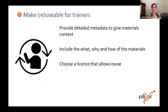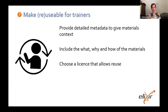Number seven is making the materials reusable for trainers. In contrast to data, what we're actually doing here is targeting people rather than machines. For a trainer to be able to take somebody else's materials and reuse them, they need to be able to understand what that material was trying to deliver, why and how — and all of this information needs to be included in the metadata. Ideally, that metadata would be structured as well, making it even easier to find. In order for trainers to be able to reuse the materials, you need to give them a license that allows that reuse. Creative Commons licenses are great for this, and there are different levels of licensing you can apply depending on your own situation.